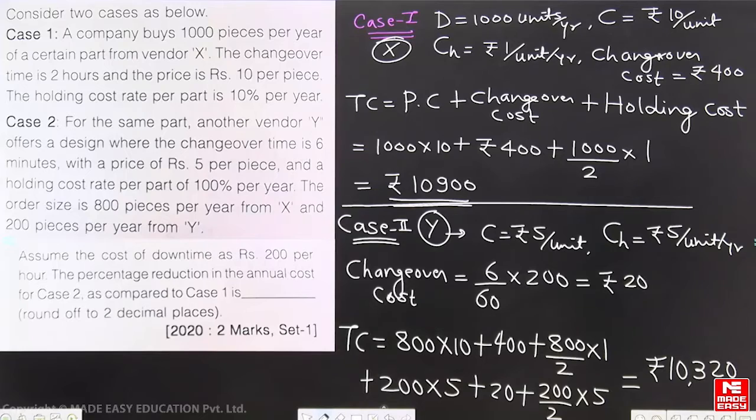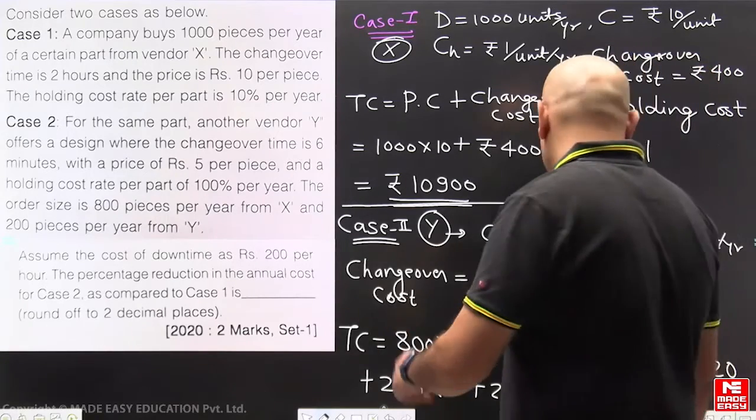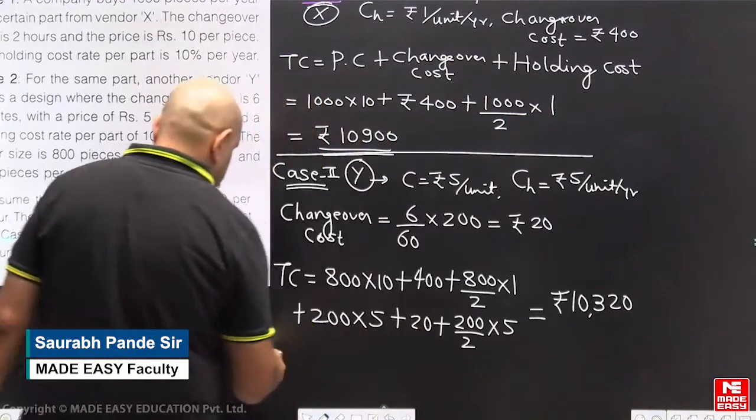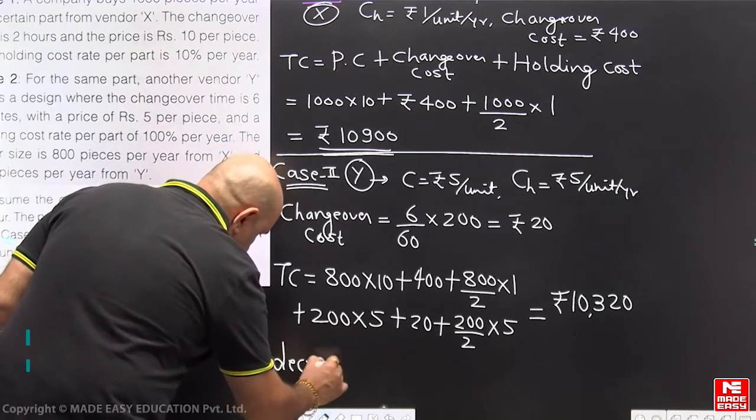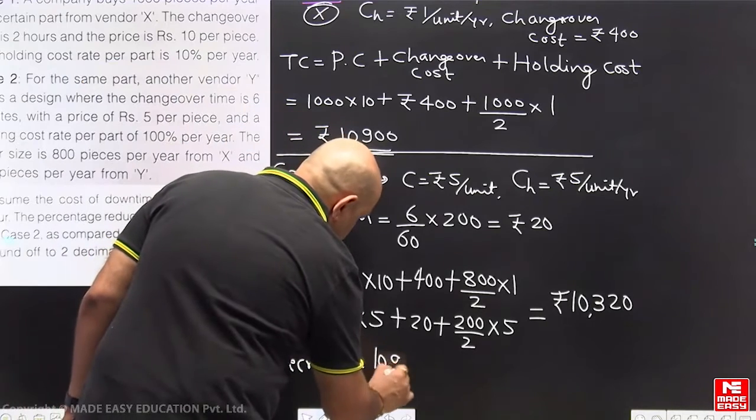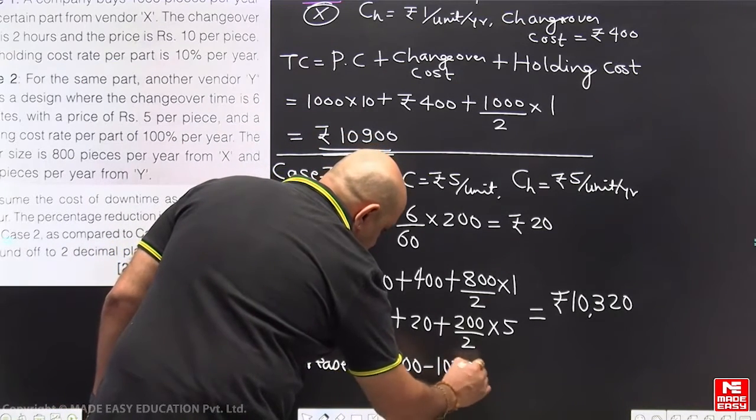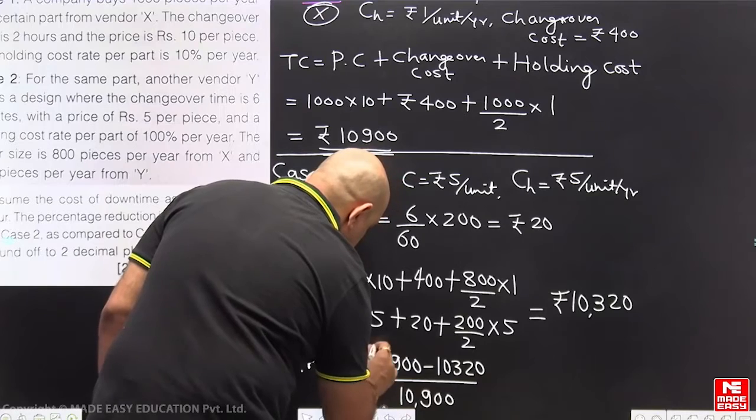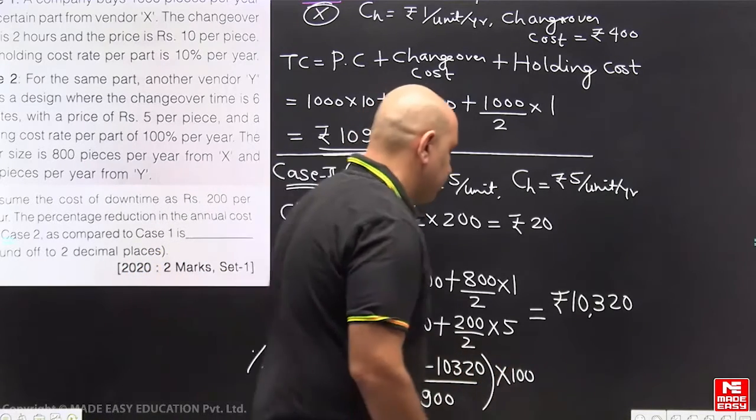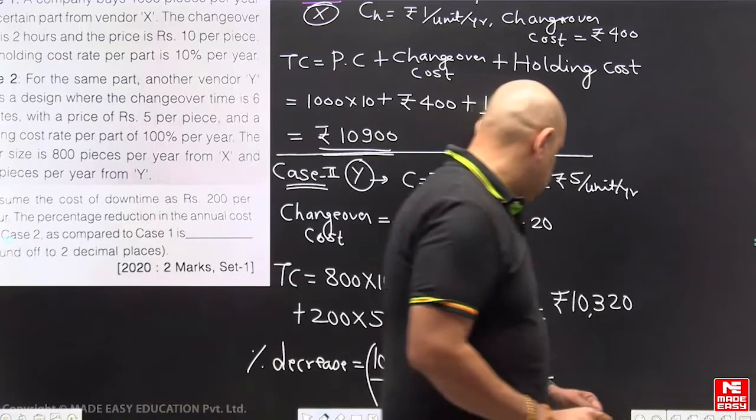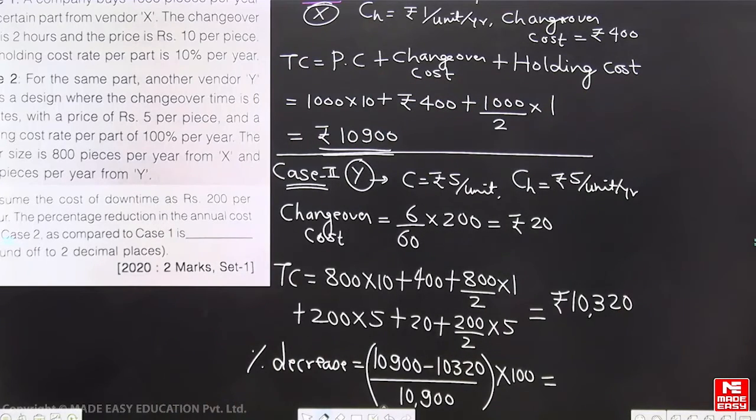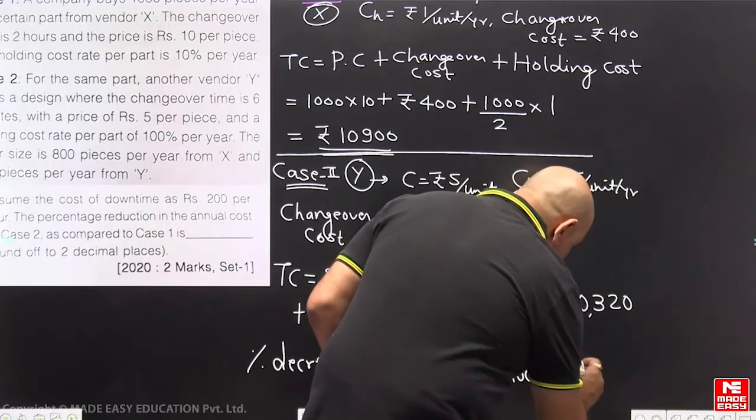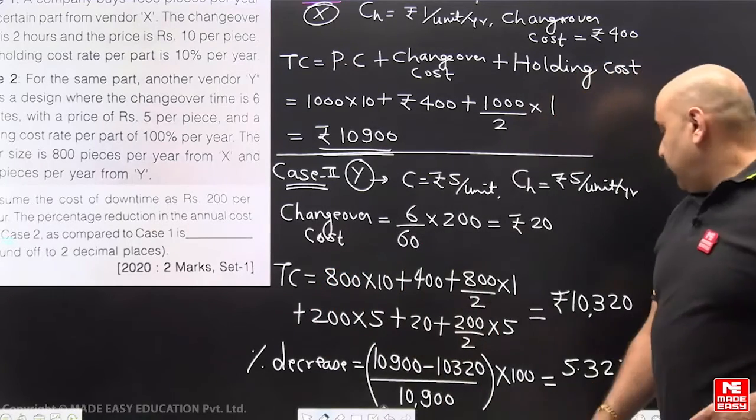Now the percentage reduction they are asking - how much decrease will be there in cost. Percentage decrease will be initially it was 10,900 minus 10,320 divided by 10,900 into 100. That comes out to be 5.32%. 580 divided by 10,900 into 100, that will be 5.32%. That will be our answer here, 5.32%.